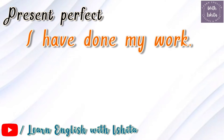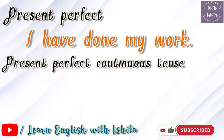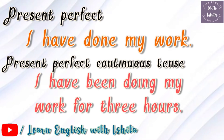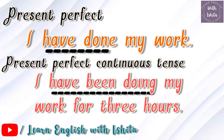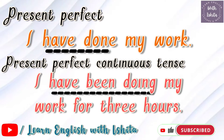Let's compare present perfect and present perfect continuous tense. Present perfect: 'I have done my work' — that means I did it in the past and I'm not doing it anymore. Present perfect continuous: 'I have been doing my work for three hours' — that means I started my work in the past and I'm still doing it now. That work is still continuing in the present time; it's not finished yet.